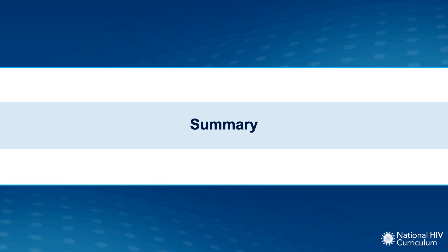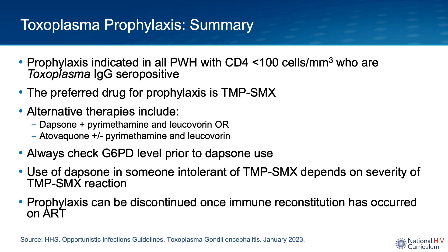Key points regarding toxoplasma prophylaxis: In people with HIV who are seropositive for toxoplasma IgG, primary prophylaxis is indicated when the CD4 count is less than 100 to prevent toxoplasma reactivation. The preferred prophylactic medication is TMP-SMX. Alternative regimens include dapsone with pyrimethamine and leucovorin, or atovaquone, which can be administered alone or in combination with pyrimethamine and leucovorin. Always check a G6PD level prior to using dapsone to avoid hemolytic anemia. Dapsone has a sulfa moiety, so the ability to use it depends on the severity of the patient's prior reaction to TMP-SMX. Finally, prophylaxis can be discontinued once the patient has achieved immune reconstitution on antiretroviral therapy.